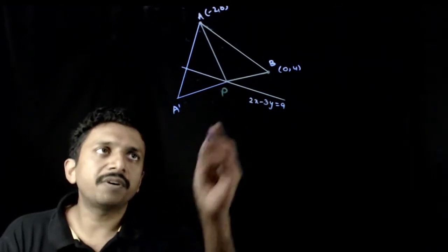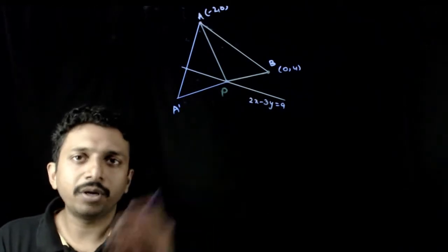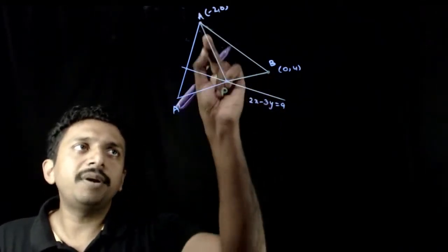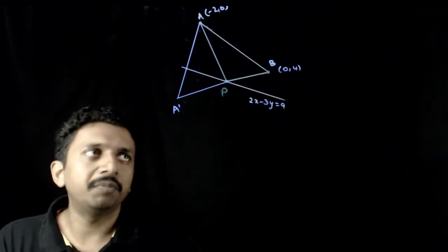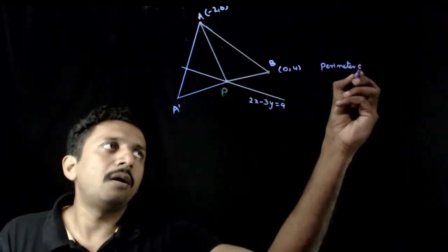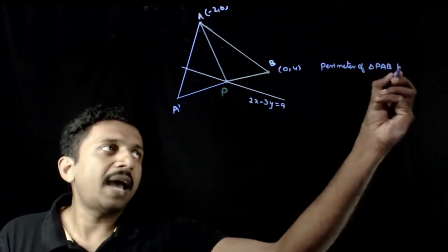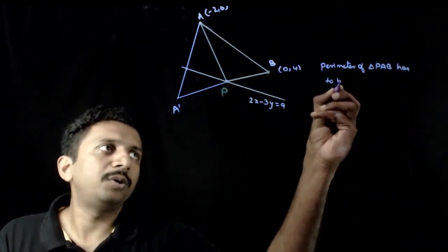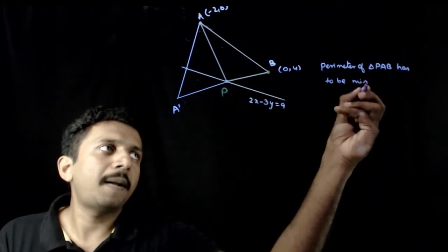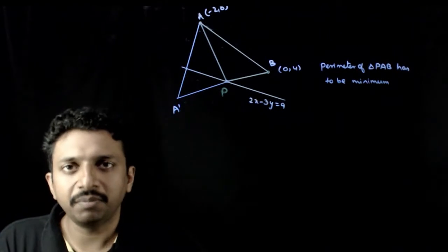The question is: for what value of P, for what coordinate P, for what point P will the perimeter of triangle PAB be minimum? Perimeter of triangle PAB has to be minimum.